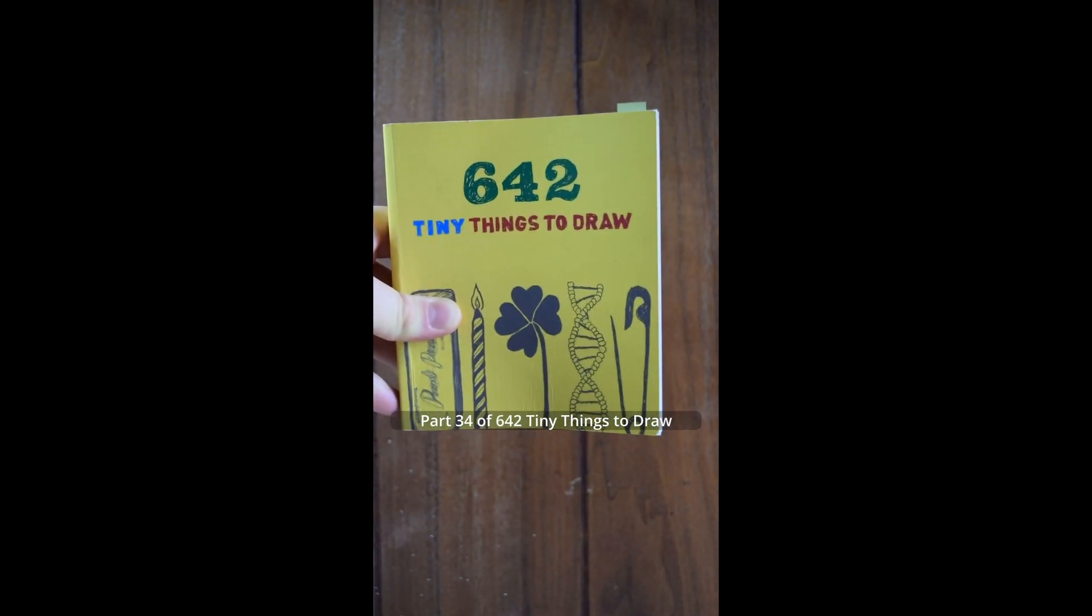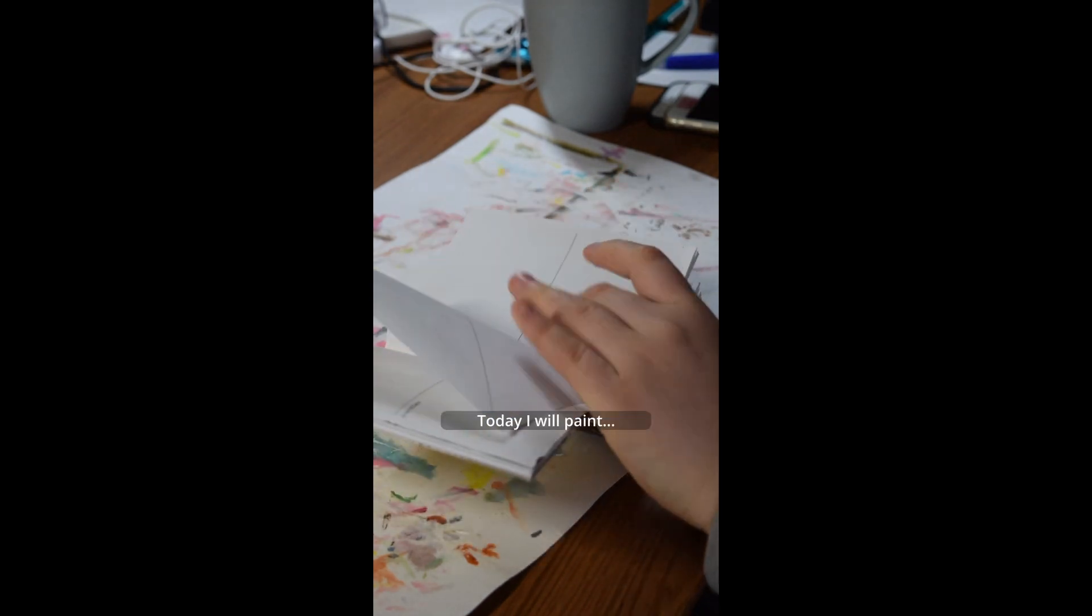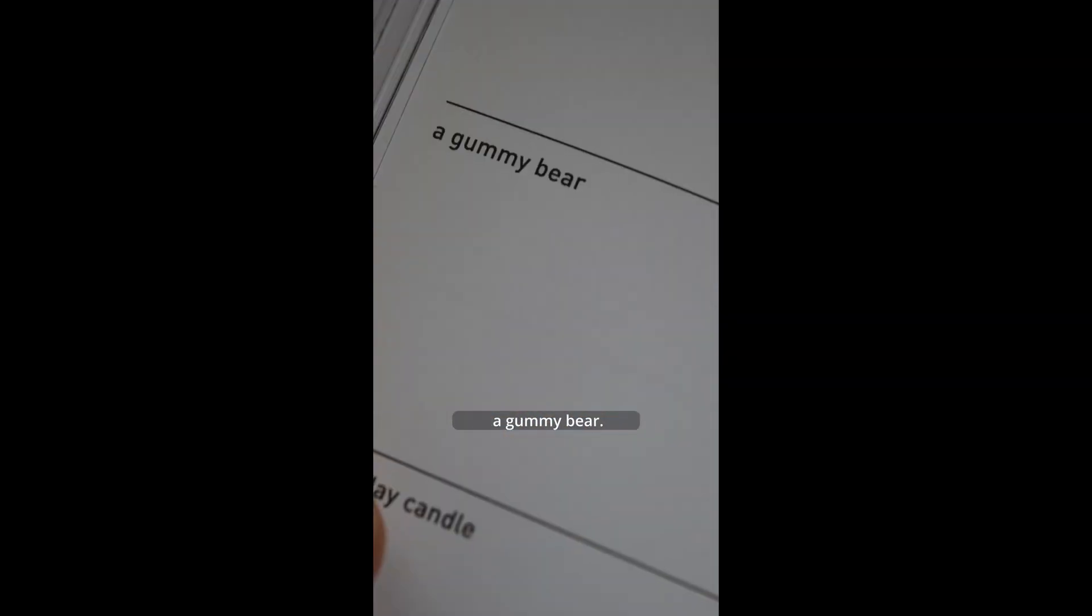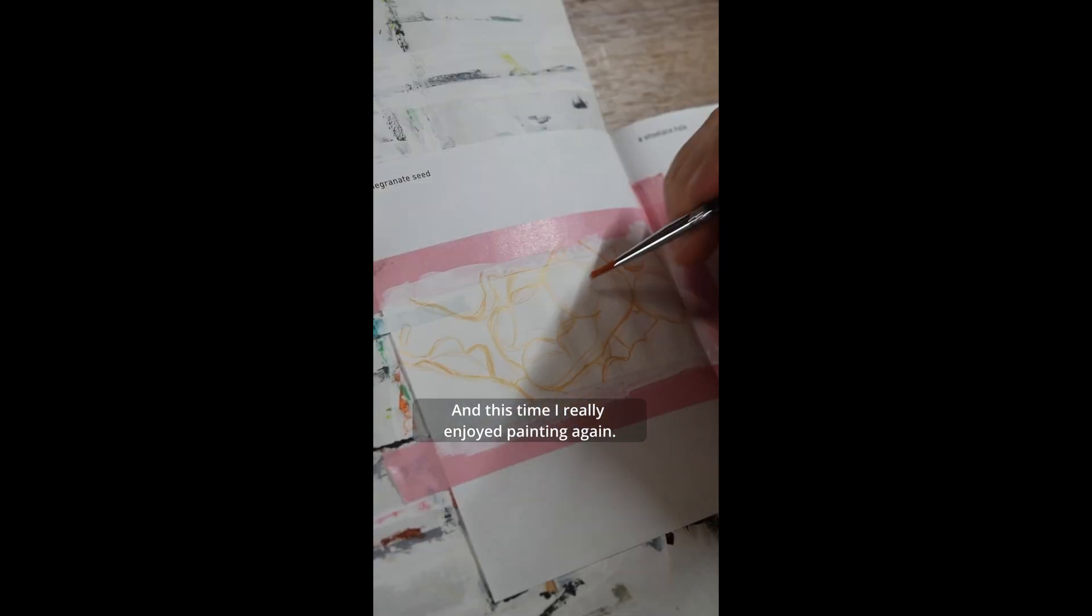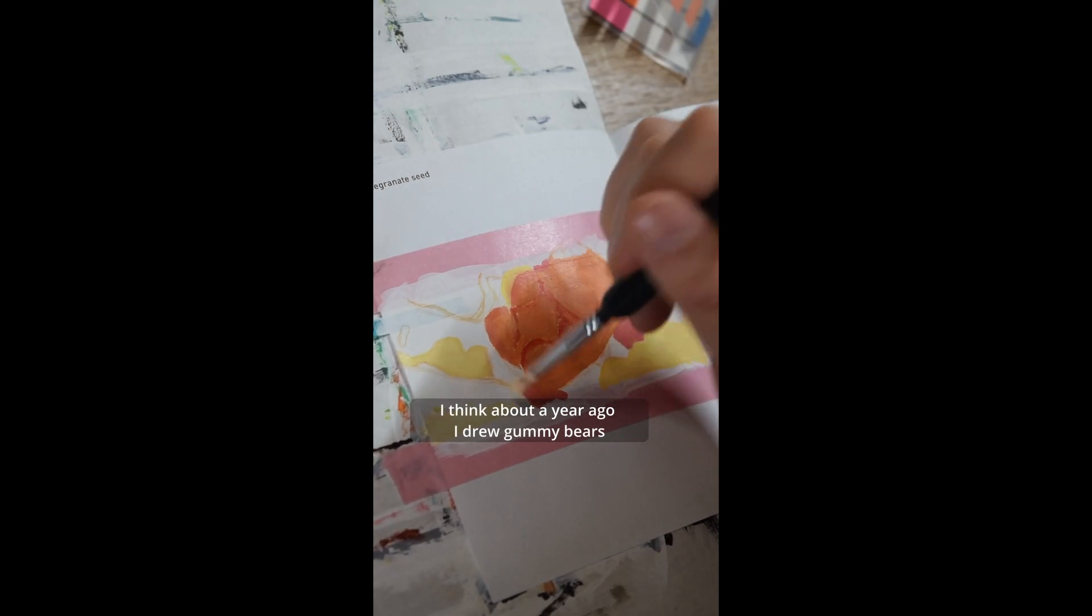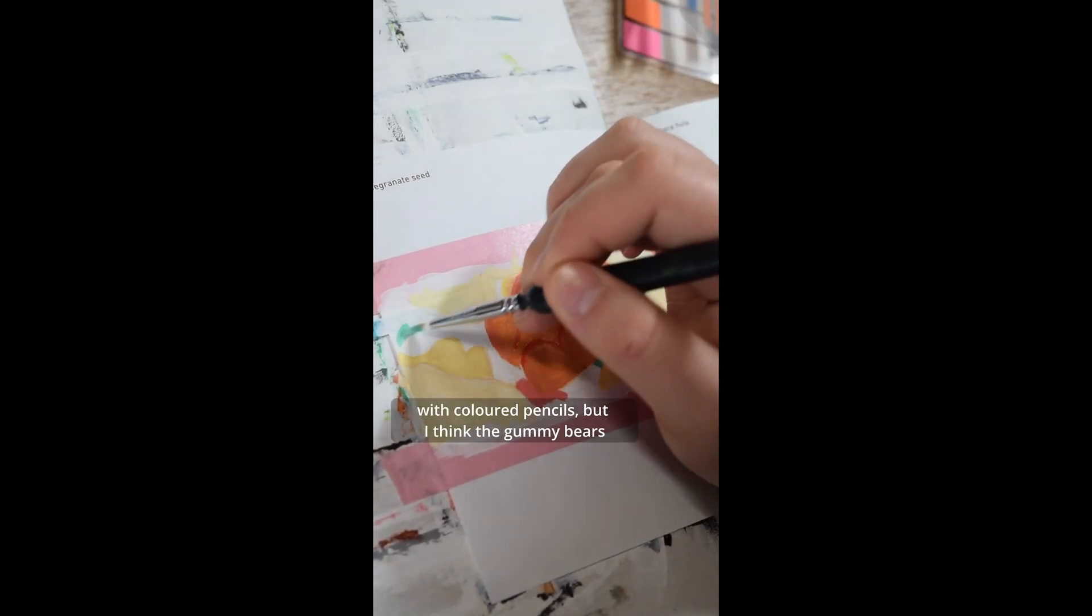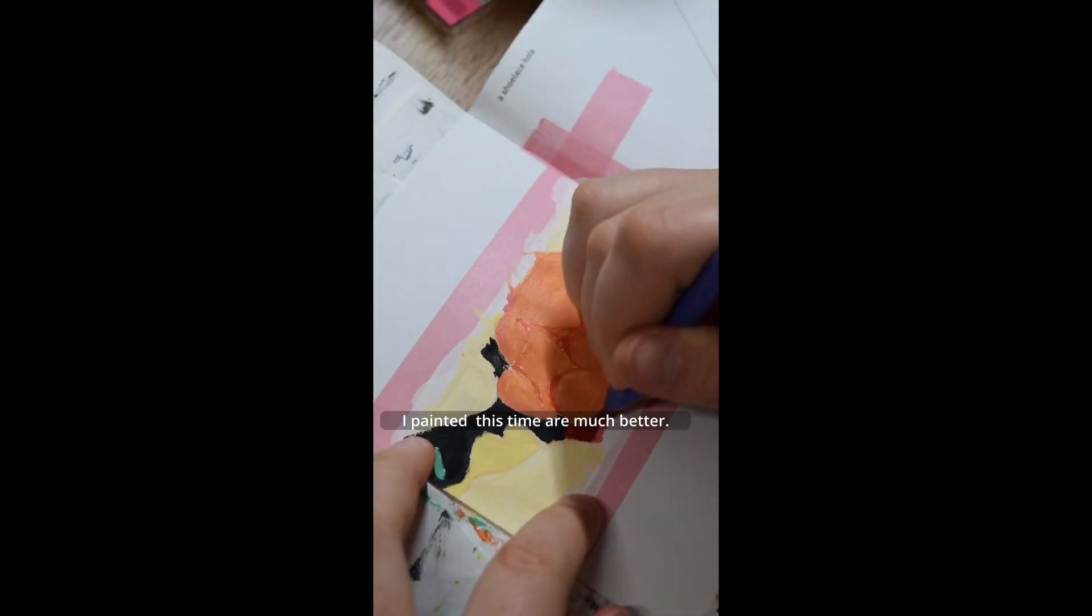Part 34 of 642 tiny things to draw. Today I will paint a gummy bear. And this time I really enjoyed painting again. I think about a year ago I drew gummy bears with colored pencils, but I think the gummy bears I painted this time are much better.